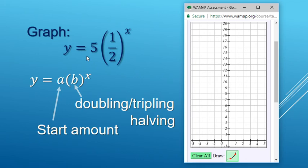So here we're going to graph 5 times 1 half to the x. This is an exponential function, so the 5 takes the place of the a, so that's going to be our start amount, and since we have a 1 half for the base, that means we're going to have a halving function. So here we go. We start at 5, and the next point over is going to be half as much, 2.5.